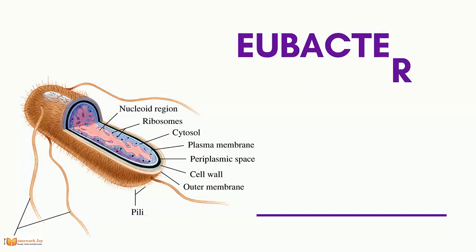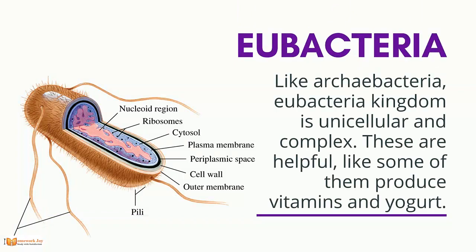Eubacteria. Like Archaebacteria, the Eubacteria Kingdom is unicellular and complex. These are helpful — for example, some of them produce vitamins and yogurt.